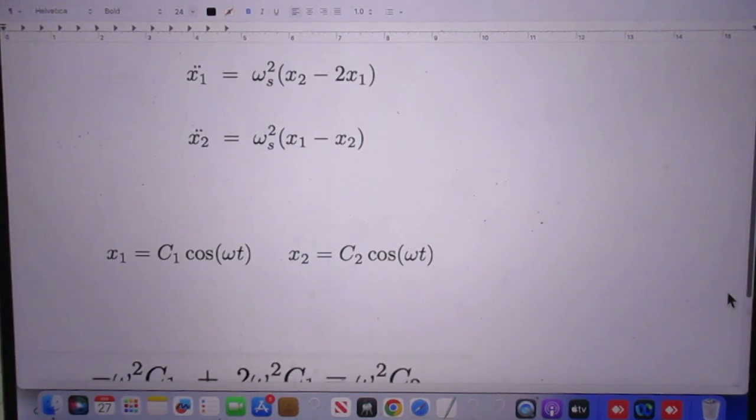Now we are going to put a trial function in these two differential equations. This is the trial function for X1, and this is for X2. The omegas must be the same, otherwise it wouldn't be a normal mode. However, the amplitudes will not be the same.